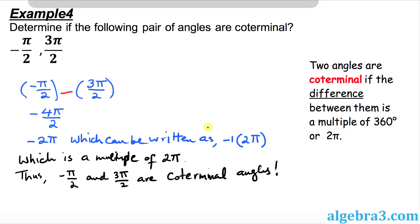And finally, you look at this example 4. This is an example of angles in terms of radians. So you again find the difference and the difference simplified out to be negative 2π, which is obviously divisible by 2π. That means these two angles are indeed coterminal angles.